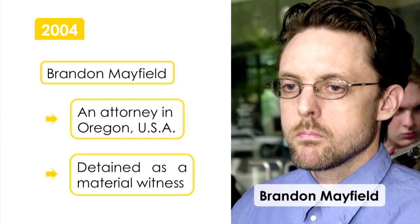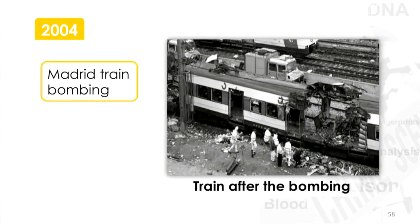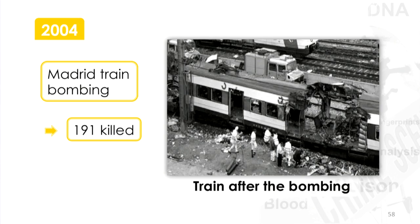Back in 2004, terrorists planted bombs on a number of commuter trains in the Spanish capital Madrid. When those bombs exploded, 191 people were killed. This was in the run-up to the Spanish general election, and the bombs almost certainly influenced who became prime minister after that election.